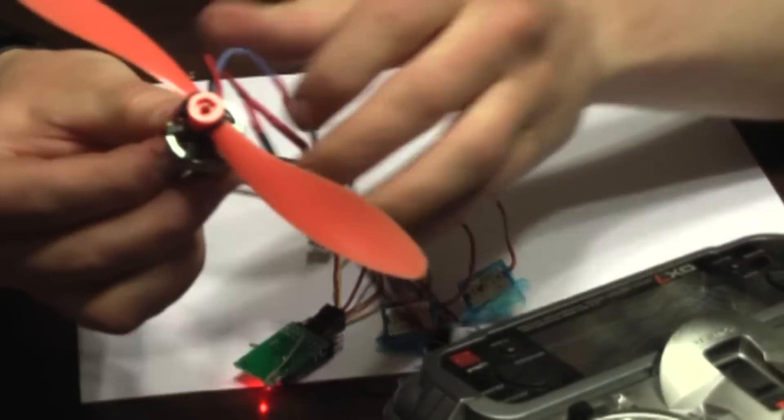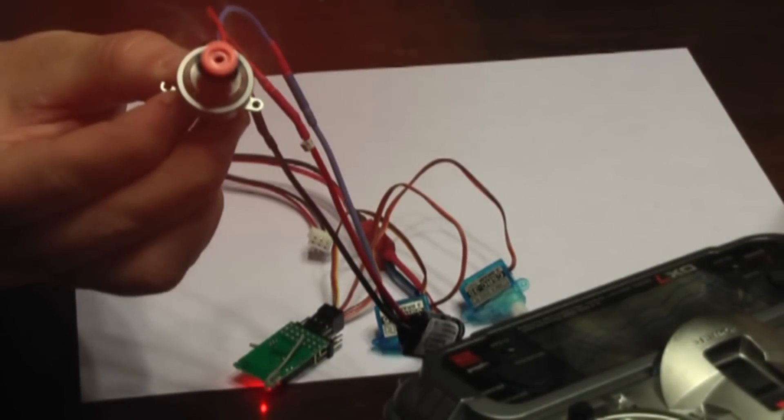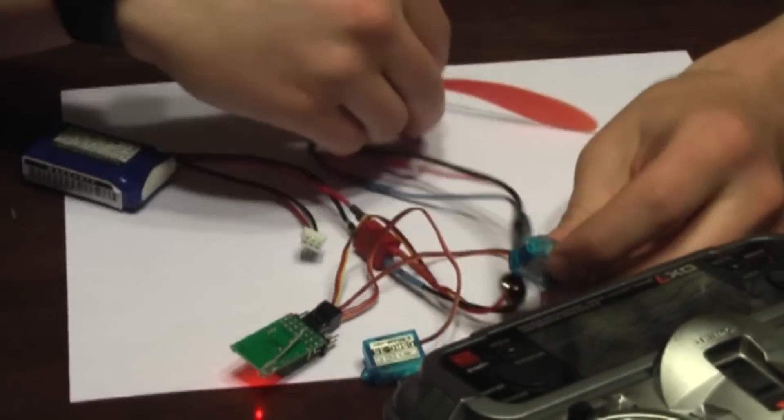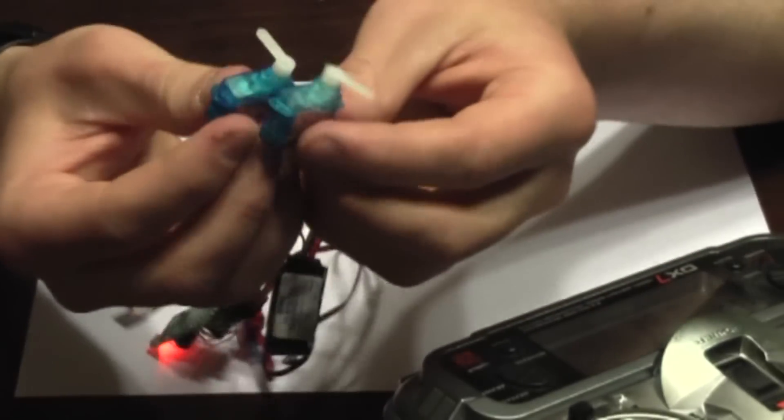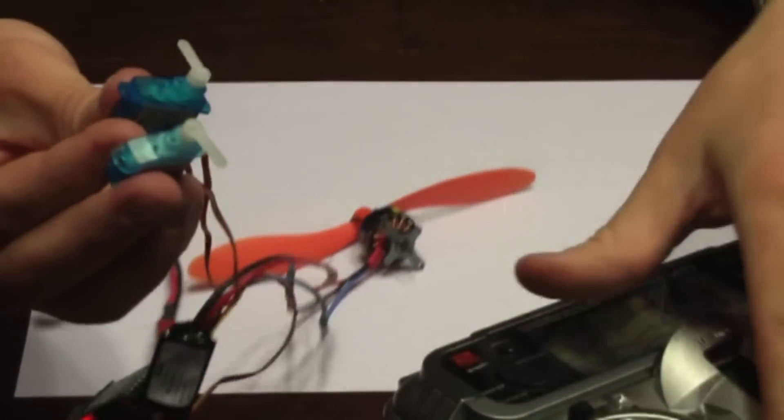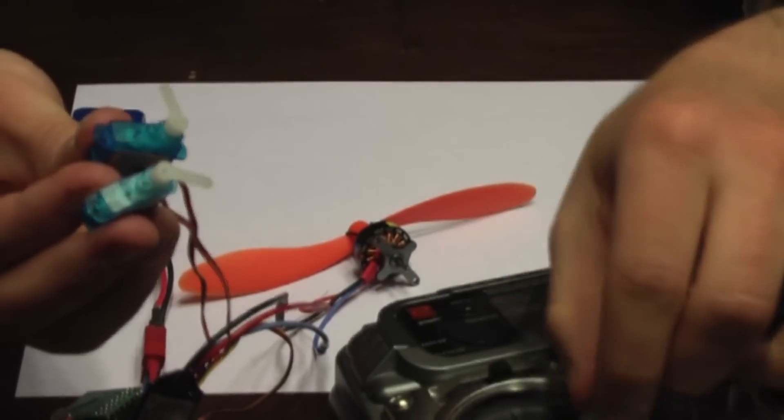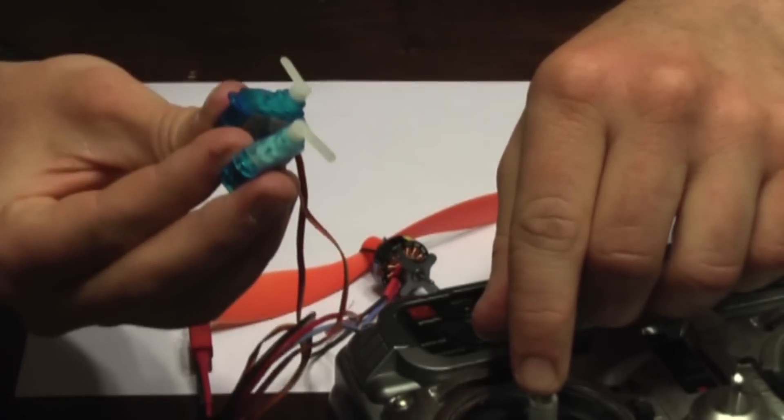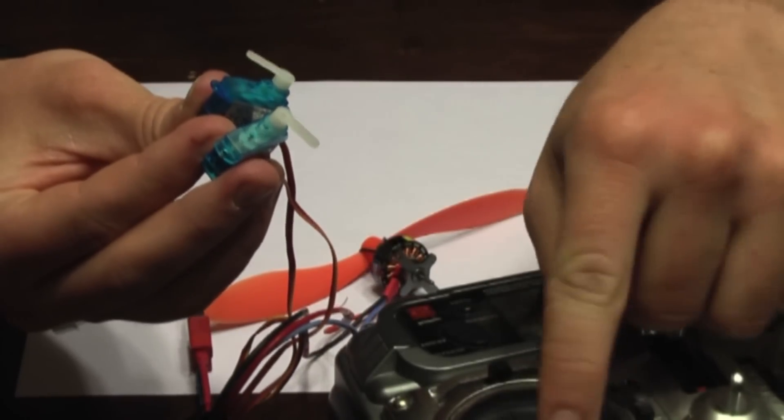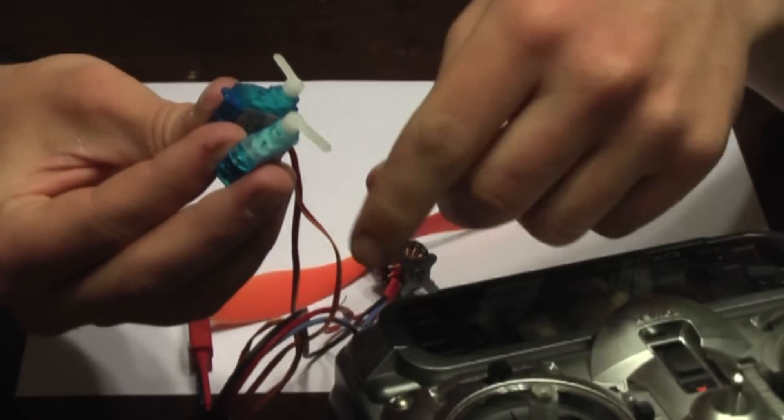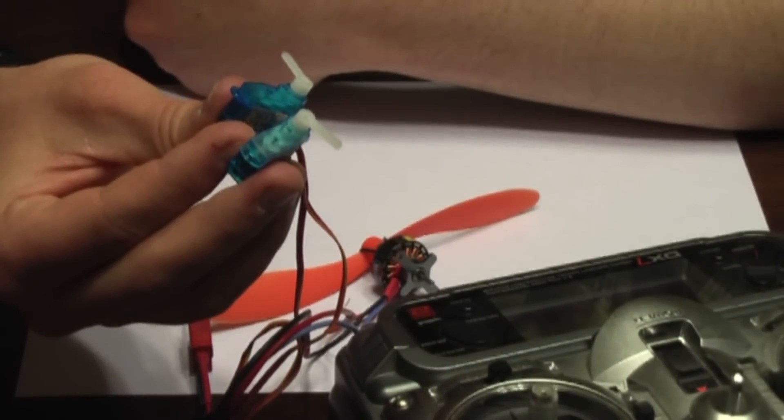Now it does not matter which two you switch. So now that's working right. Now we've got our servos hooked up, let's make sure they work. Now when I move the right stick on my controller, it's going to move the control horns on the servos. And it's as simple as that.